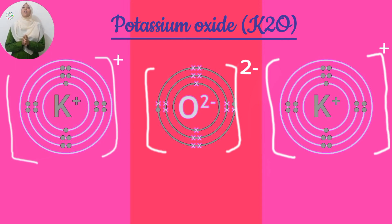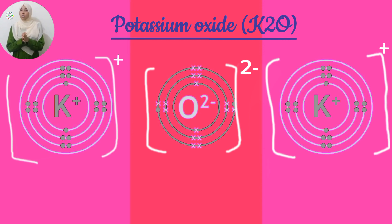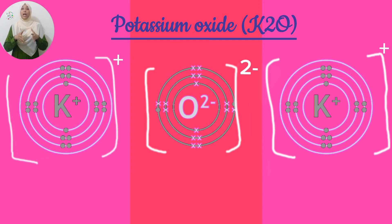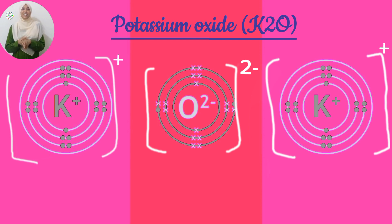And that is the end of part 1. I hope you've understood everything. Go through the examples we've done and try to draw them by yourself. In the next part, I'm going to discuss the properties of ionic compounds, which is very important. So be sure to check it out.